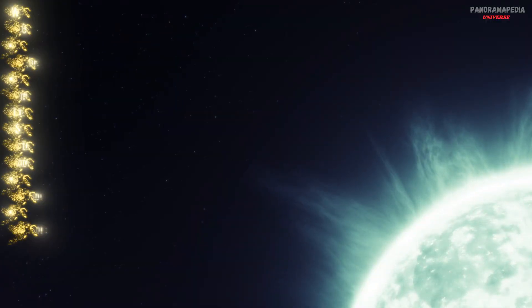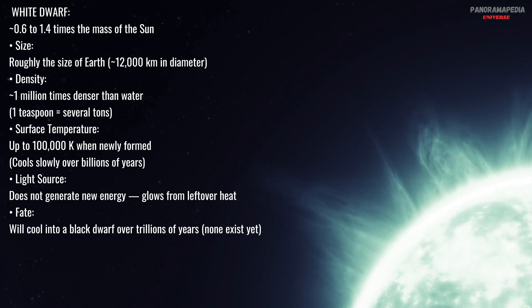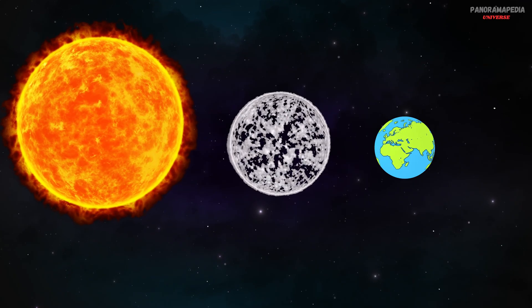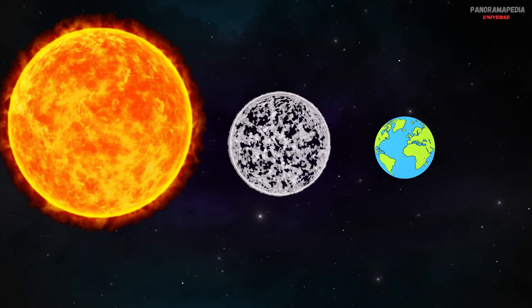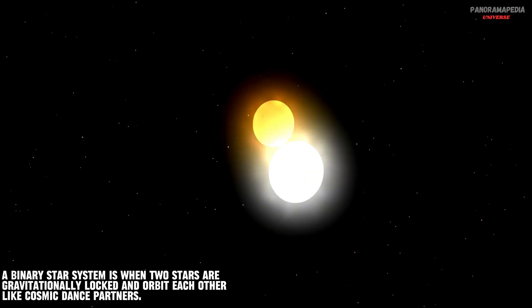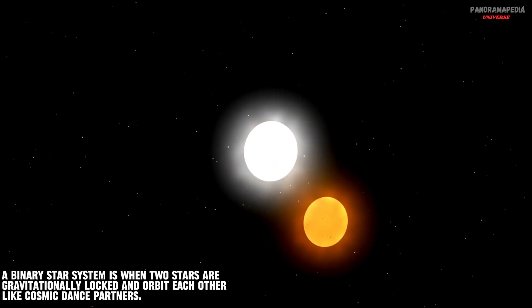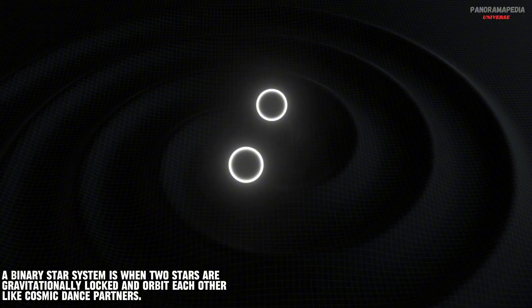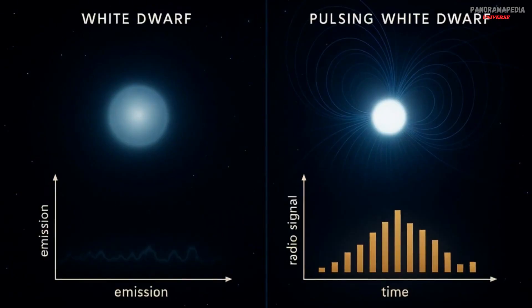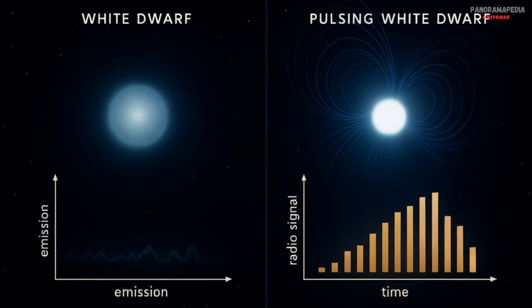Could it be a white dwarf? Some suggested a white dwarf star, the burned-out core of a dead star, larger than Earth but much smaller than the Sun. If it had a strong magnetic field and was part of a binary system, it might emit regular signals through magnetic interaction or matter transfer. But white dwarfs don't usually pulse like that, and certainly not with radio waves this powerful.